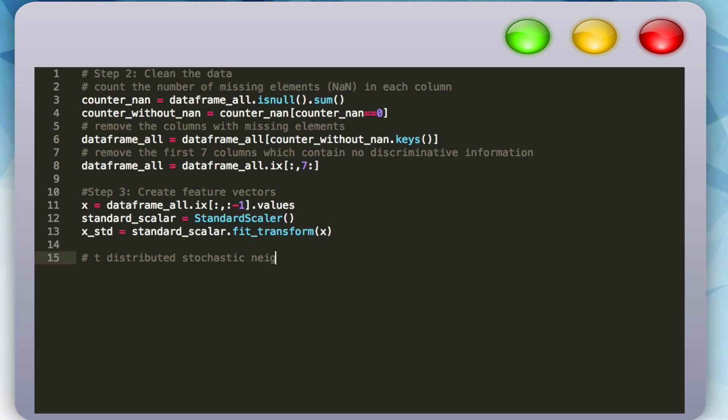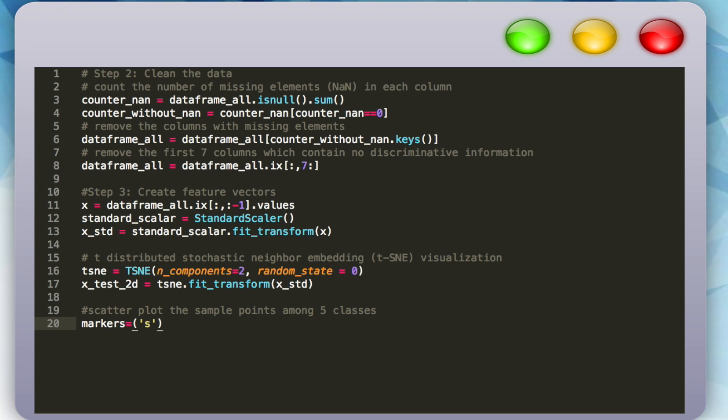We'll initialize our t-SNE model via scikit-learn and set the number of components to 2. This parameter is asking how many dimensions do we want our end result to be in. We'll fit it on our feature vectors and store the resulting two dimensional feature vectors in the XTest2D variable.